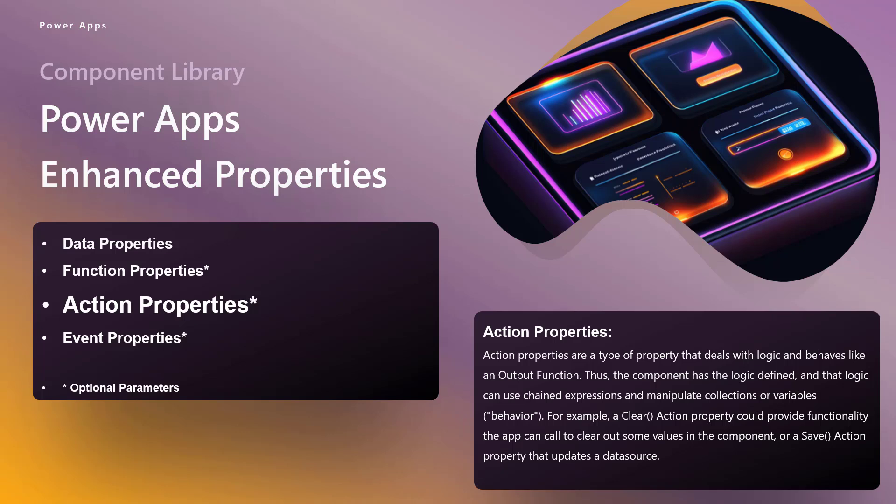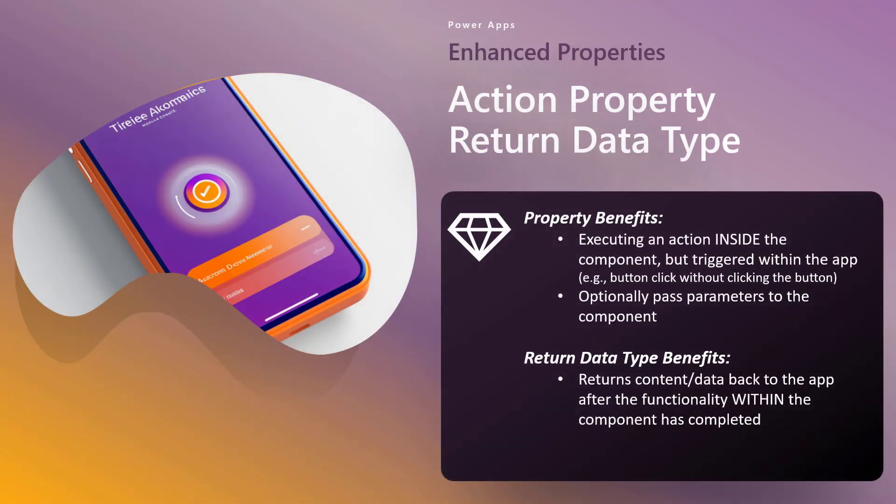So if you're comfortable with that, the big question is: how do return data types fall into the storyline here? The benefits of an action property are, as I mentioned, you can execute activity or functions inside the component but triggered within the app — a button click without clicking the button. And of course, we have the ability to optionally pass parameters to the component. We'll see an example of that.